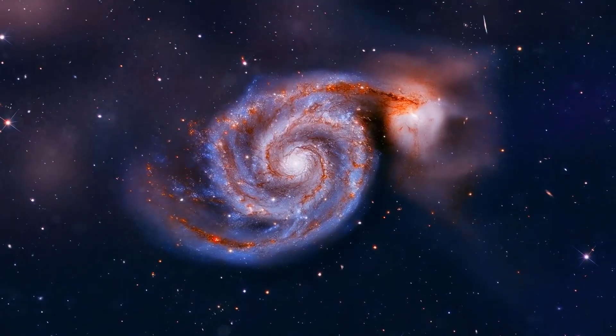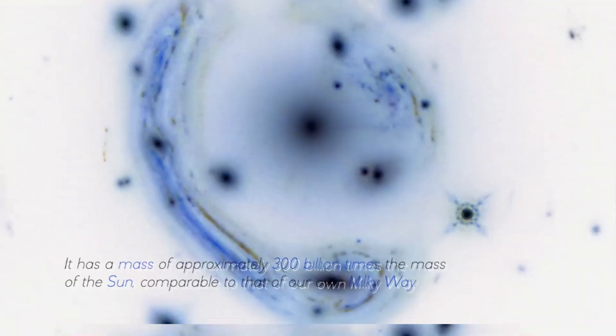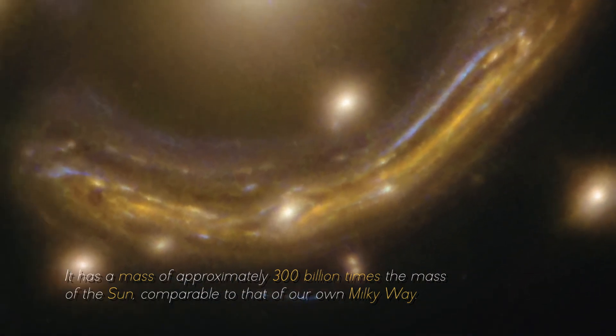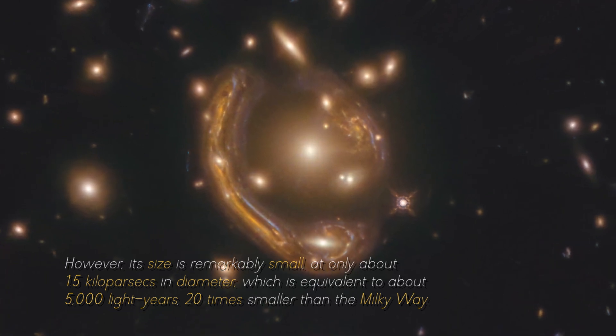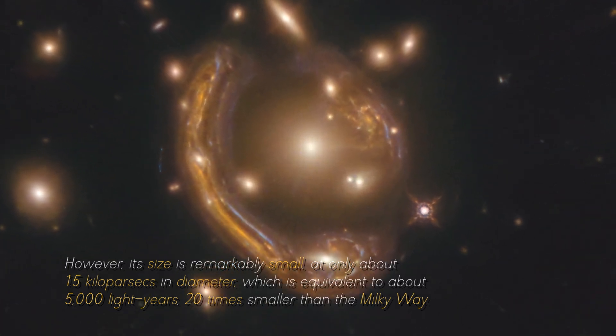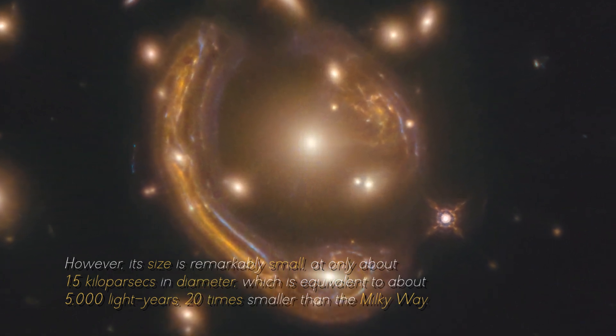However, the quiescent galaxy discovered by the James Webb Space Telescope is an extreme example of this type. It has a mass of approximately 300 billion times the mass of the Sun, comparable to that of our own Milky Way. However, its size is remarkably small, at only about 1.5 kiloparsecs in diameter, which is equivalent to about 5,000 light years, 20 times smaller than the Milky Way.